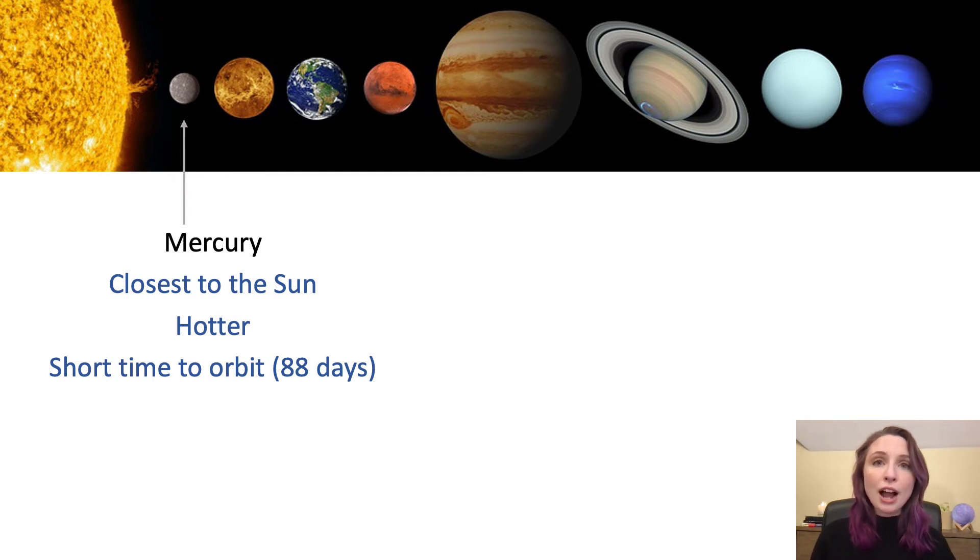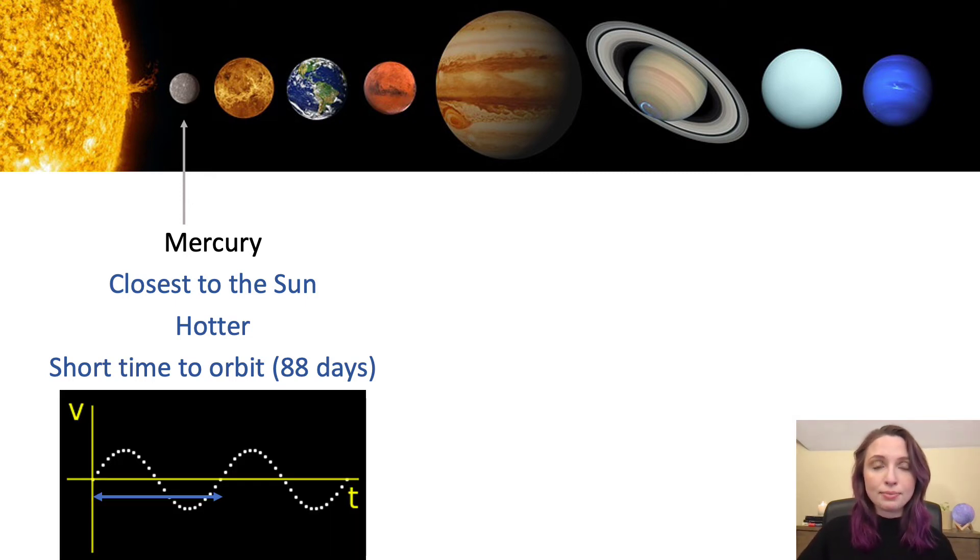If we were to look at a graph of the movement of the sun caused by Mercury, it would look something like this. The blue arrow is showing us how long it takes the sun to complete one wobble caused by Mercury.